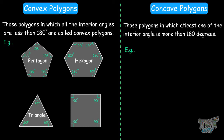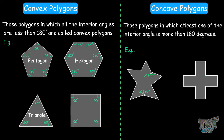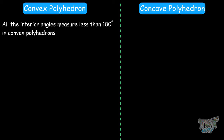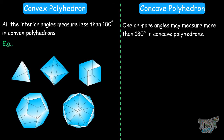So all polygons in which the interior angles are less than 180 degrees are considered convex polygons. On the other end, this polygon is a star-shaped polygon where its interior angle is 200 degrees, and this other one is 190 degrees. Here we have a polygon in the shape of a plus sign — the interior angle is 270 degrees. Such polygons in which one or more interior angles have a measurement greater than 180 degrees are considered concave polygons. Now let's consider convex and concave polyhedrons — the idea is the same. A convex polyhedron is one where all interior angles measure less than 180 degrees, and a concave polyhedron is where one or more angles measure more than 180. Here are some examples of convex polyhedrons and here are some examples of concave polyhedrons.